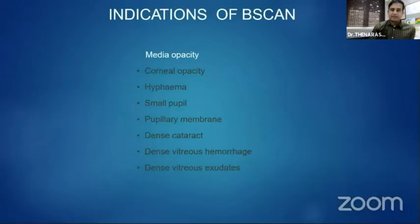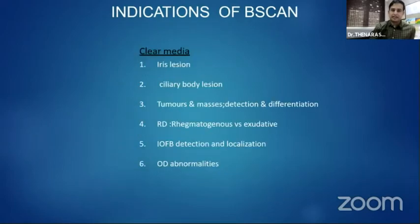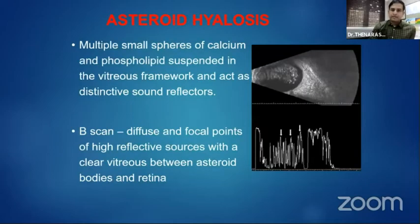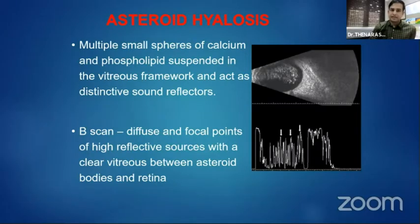The indications of B-scan include both media opacity and clear media conditions. Coming to clinical scenarios, asteroid hyalosis commonly appears as small mild-to-moderate vitreous dot echoes with a clear translucent space behind the vitreous dot echoes and the retina, which is classical of asteroid hyalosis.